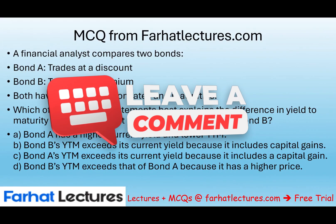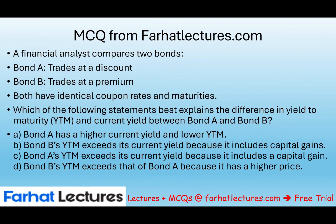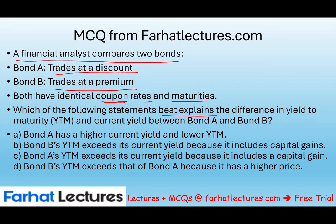Let's take a look at this multiple choice question from FarhatLectures.com. A financial analyst compares two bonds. Bond A traded at a discount; Bond B traded at a premium. Both have identical coupon rates and maturity. Which of the following statements best explains the difference between yield to maturity and the current yield between Bond A and Bond B?